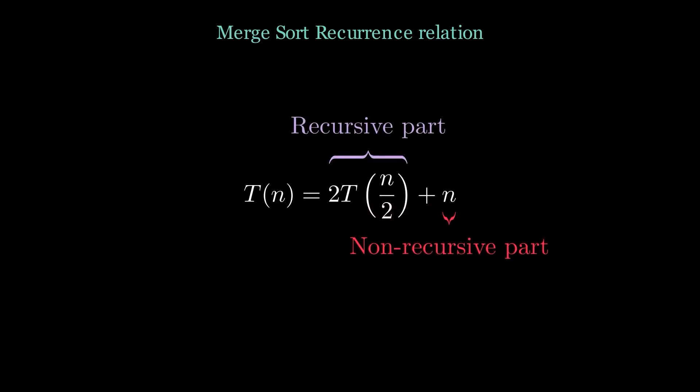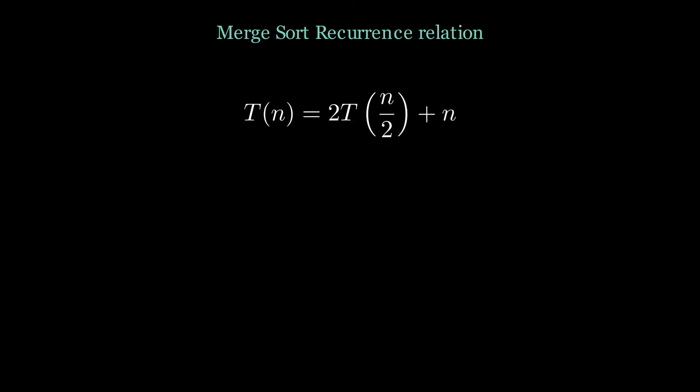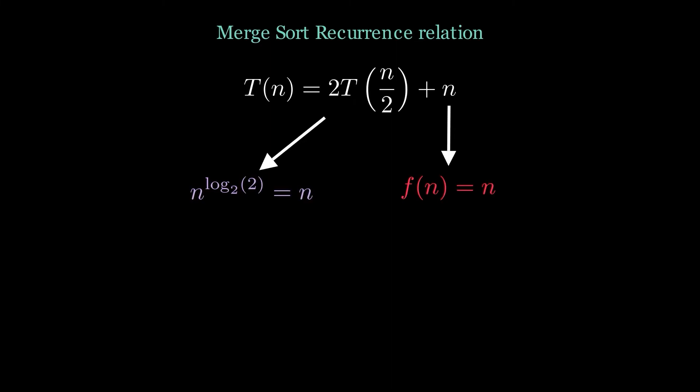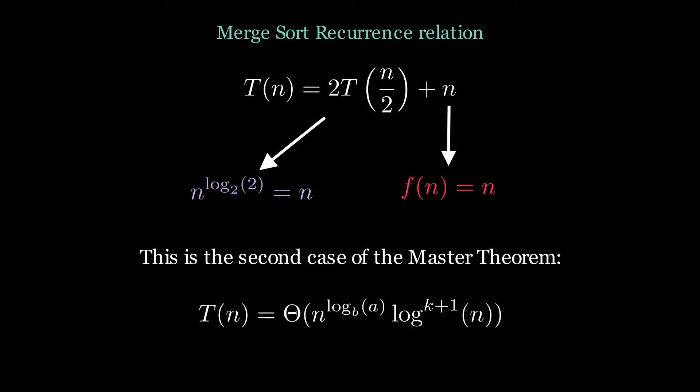Now let's do it for merge sort. In this case, both the recursive and non-recursive growth rates are similar. So that means this is the second case of master theorem. Here k is again 0, because there is no logarithmic factor present in the function. So substituting all the values will give the complexity Θ(n log n).